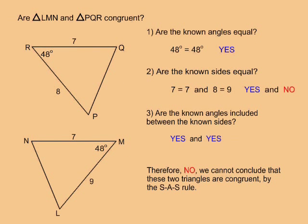In this example, are triangle LMN and triangle PQR congruent? Question 1: are the known angles equal? Yes, both triangles have a 48 degree angle. Question 2: are the known sides equal? Both triangles have a 7 unit side, but one has an 8 unit side and the other has a 9 unit side. So no, the known sides are not equal.